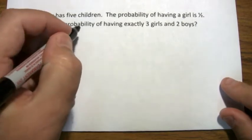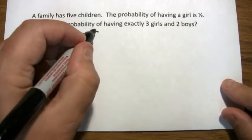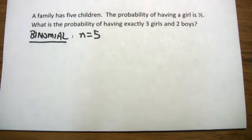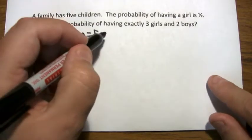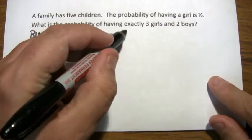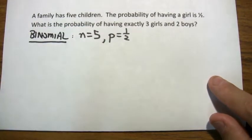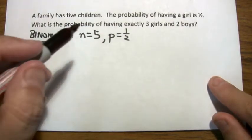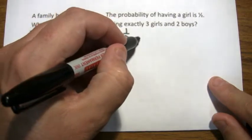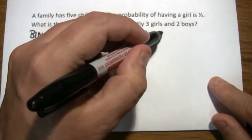You're doing it five times each time you have a trial, that's having a child. The probability of having a girl is one-half. And if you let x be the number of girls, you're looking for when x is equal to three.